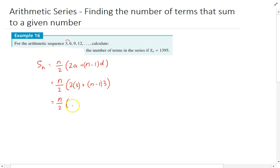All right, so n over 2 is going to be equal to 2 times 3 which is 6, and if I expand this I'll get 3 times n which is 3n, and 3 times negative 1 which is negative 3. And then 6 minus 3, so that's going to be 3 minus 3n. So n over 2 times 3 minus 3n, and we've got some other piece of information here - we know that Sn is 1395.